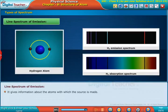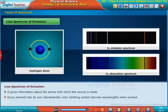Discrete or line spectrum gives information about the atoms with which the source is made. Every element has its own characteristic color, emitting certain discrete wavelengths when excited.